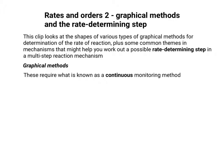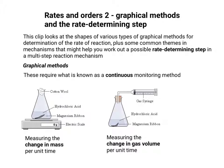All these require what's called a continuous monitoring method. There are different ways of doing this. You could, for example, measure the change in mass per unit time, or you could measure the change in gas volume per unit time. These two examples give you the same reaction — in this case, the reaction of magnesium with hydrochloric acid.